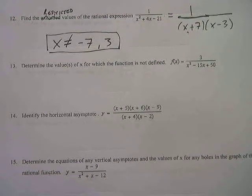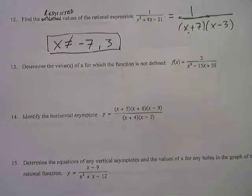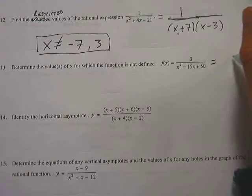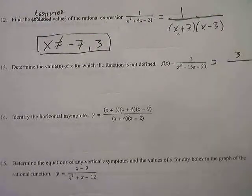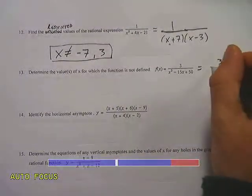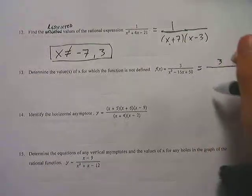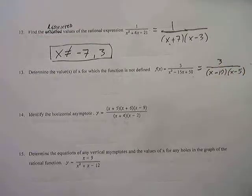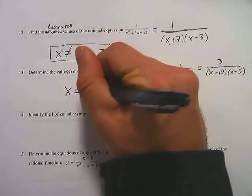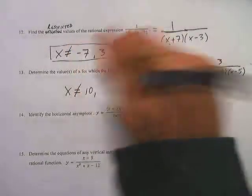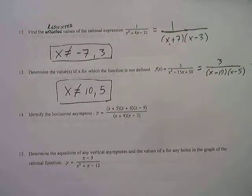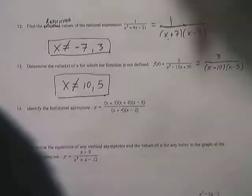On the next one, determine the values of x for which the function is not defined — same thing, just another way to ask for the restricted values. So the first thing we ought to do is factor it. I'm going to have a 3 on the top in the numerator, and in the denominator I'm going to have (x - 10)(x - 5). So I've got two restricted values here: x cannot equal positive 10 or positive 5.